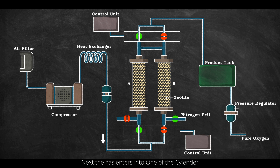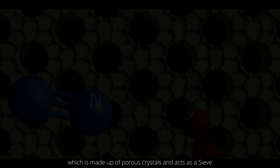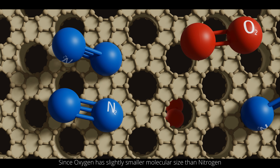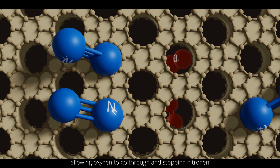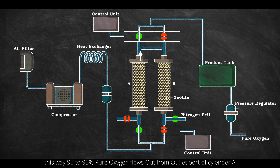Next, the gas enters into one of the cylinders — let's call it Cylinder A. Inside the cylinders, there is a substance known as zeolite, which is made up of porous crystals and acts as a sieve. Since oxygen has a slightly smaller molecular size than nitrogen, it allows oxygen to pass through while stopping nitrogen, so 90-95% pure oxygen flows out from the outlet port of Cylinder A.